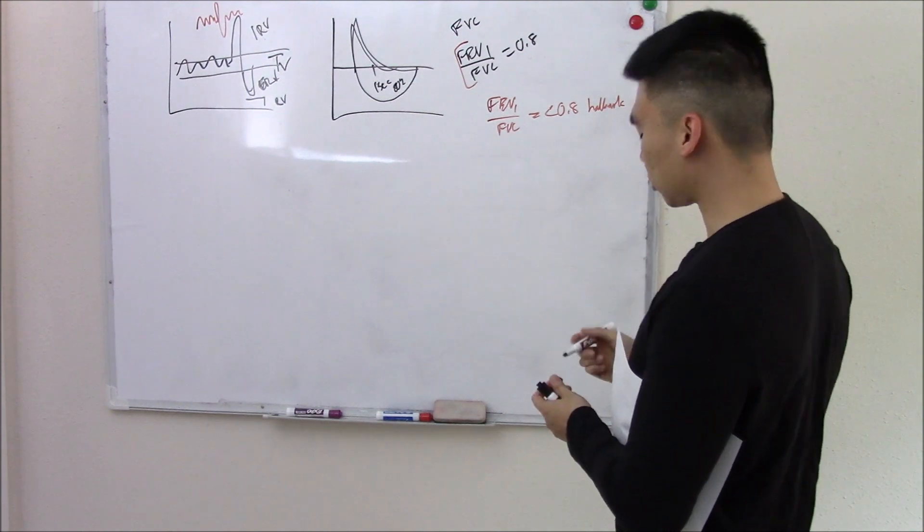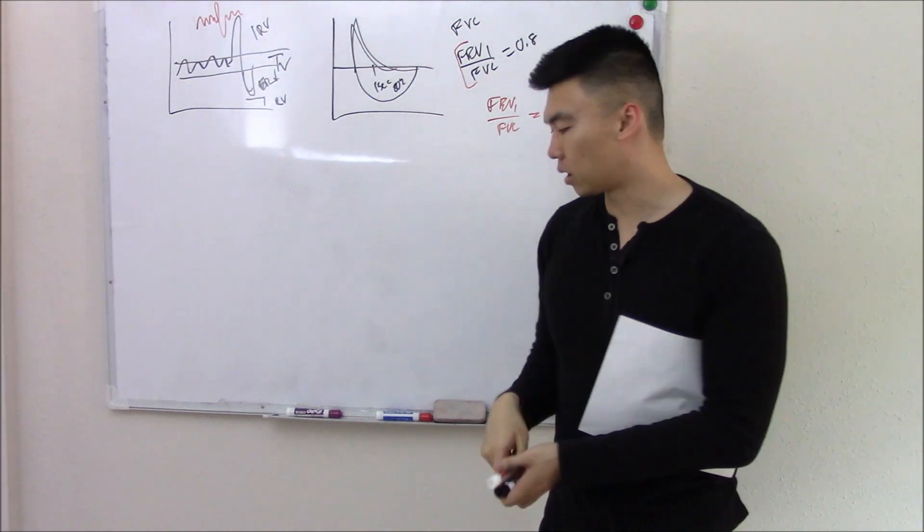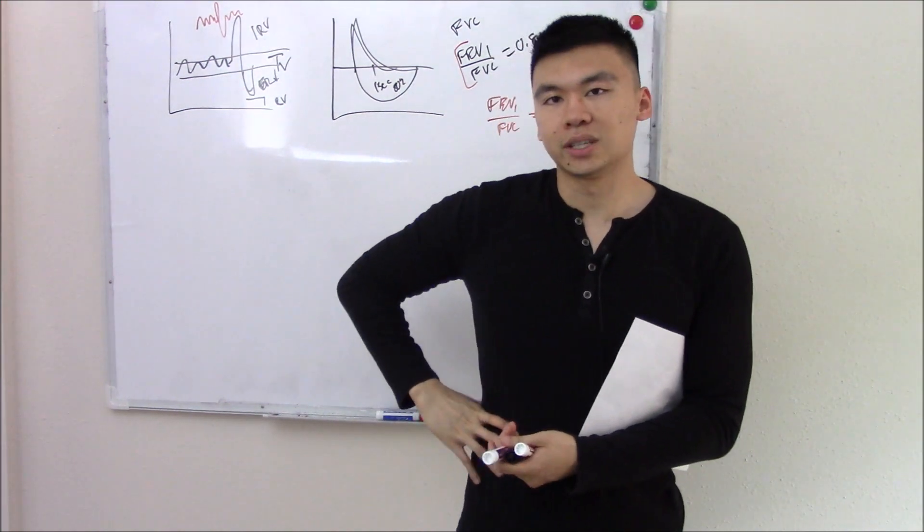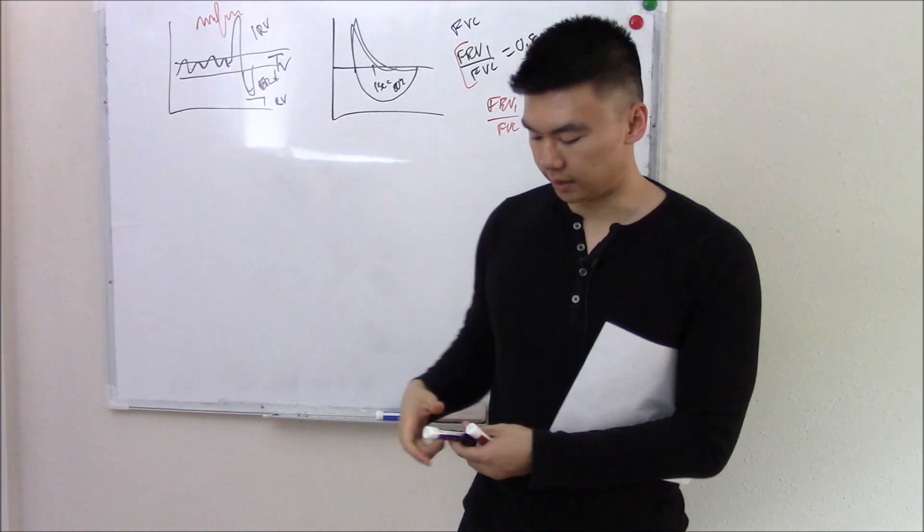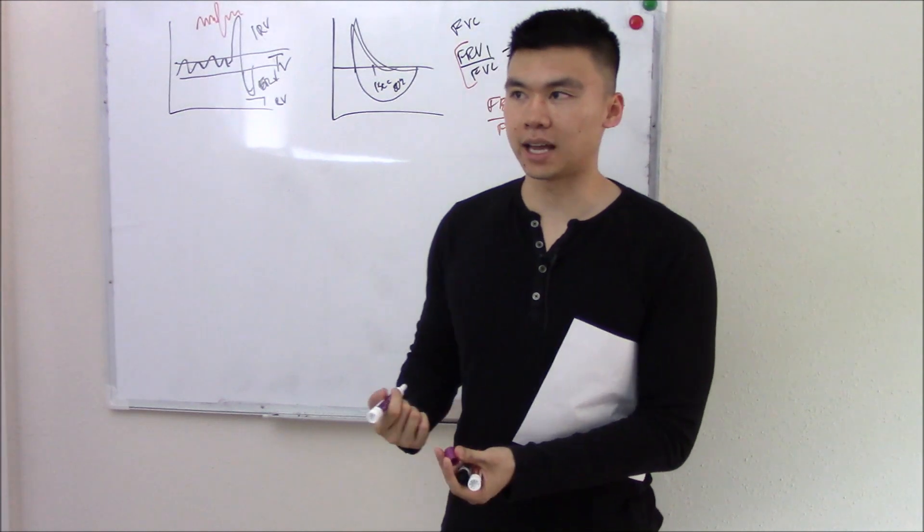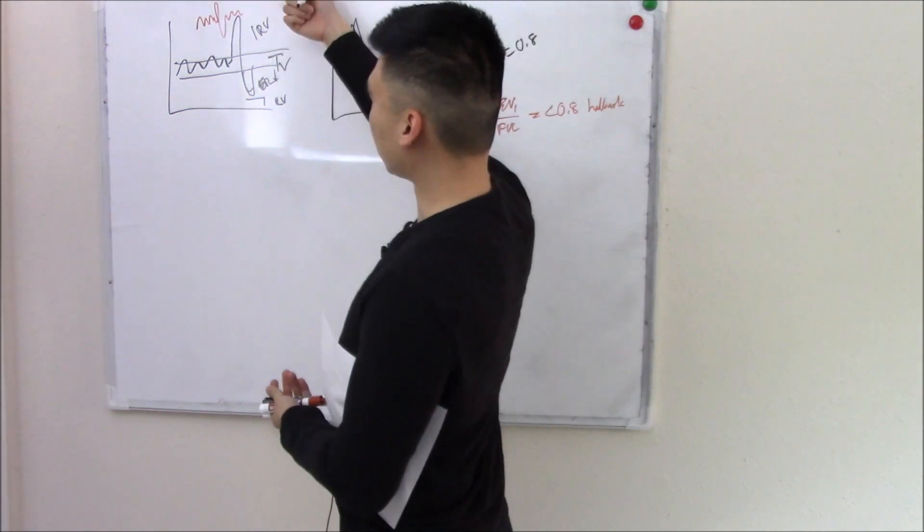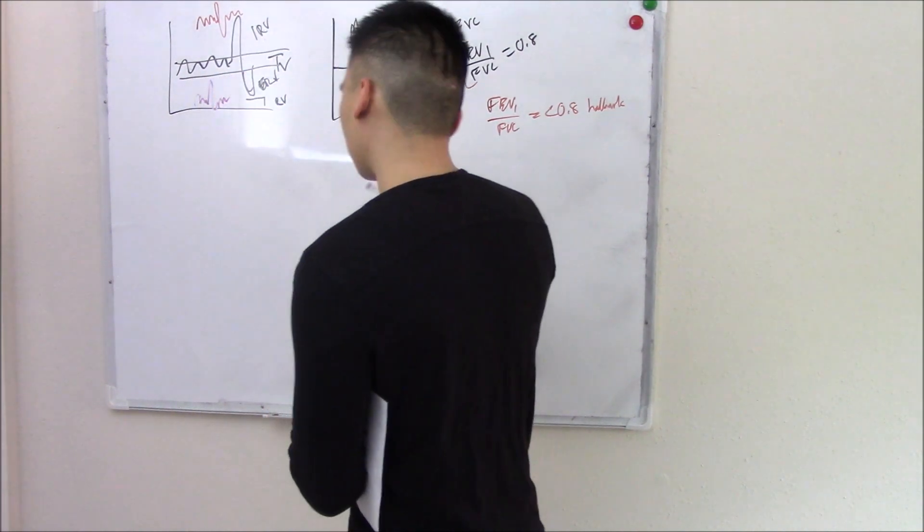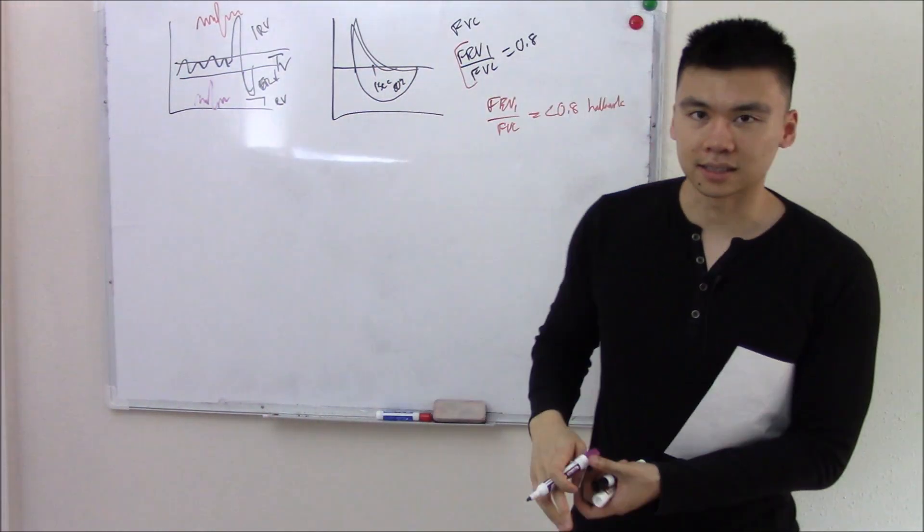That was obstructive lung disease. But this video isn't about obstructive lung disease, it's about restrictive. That's that inability to expand, that corset. So how does it affect this? Well, if you can't fill it with air, then will that be increased volume or decreased volume? It'll be decreased volume. So you have decreased residual volume, all that stuff.